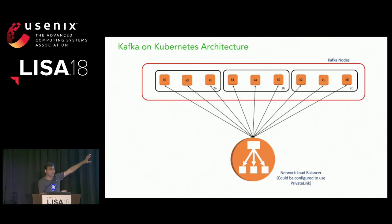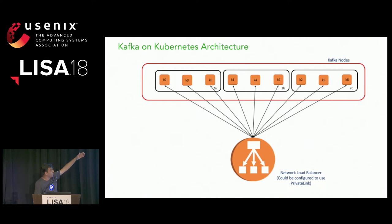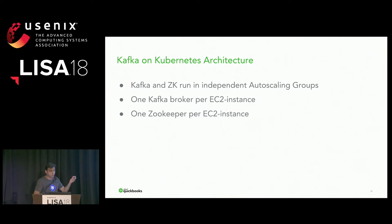We decided to use a network load balancer. The NLB would front all Kafka brokers — each of the nine brokers has private IPs and exports a particular port, one port per broker. The DNS name of the NLB is shared with consumers or clients so they connect to any broker using the NLB DNS name colon port — P0 for Kafka-0, P1 for Kafka-1, and so on.